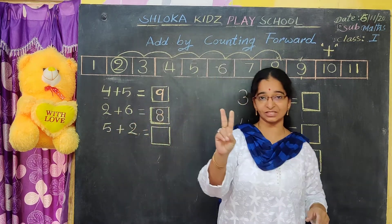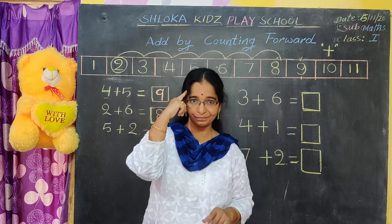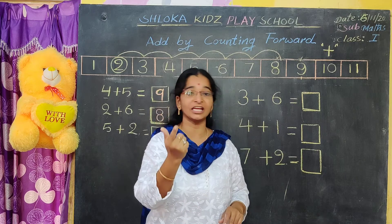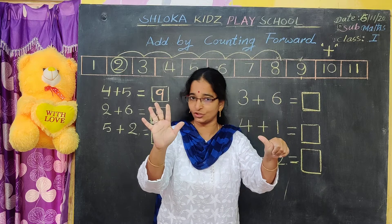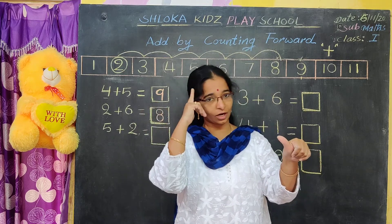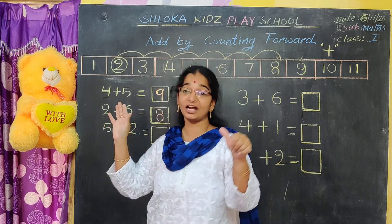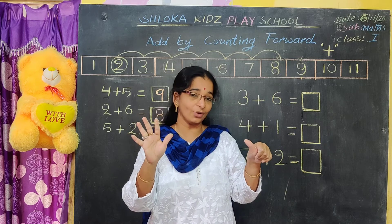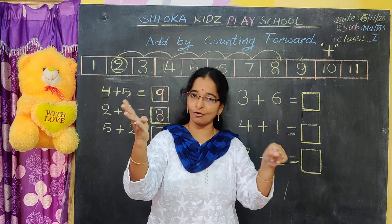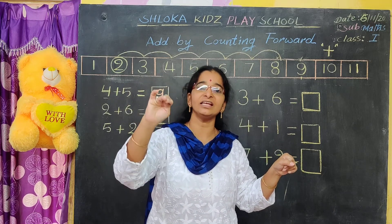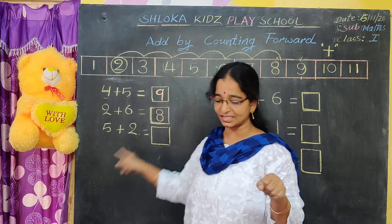One more example: you are having two chocolates with you. The two chocolates you have to keep in your mind. Your friend gave you six more chocolates. You are having already two chocolates — keep two in the mind. Your friend gave you six more chocolates. Next, two in the mind, after two: three, four, five, six, seven, eight. We got eight.